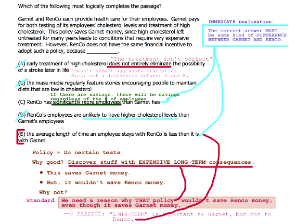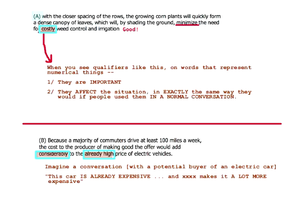Be careful with the whole extreme language thing. A lot of things that some people would call extreme language are actually the kind of language that helps answer choices do what they do. If you get one of those questions where you're trying to prove one of the statements — 'which one is established by the given information' — then extreme is not great. But if it's a question like this where the goal is to bring in outside information that helps establish something, then extreme is totally fine — in fact, it might even help.